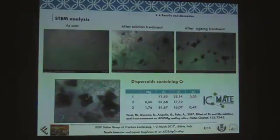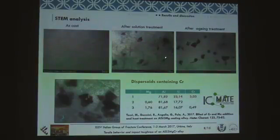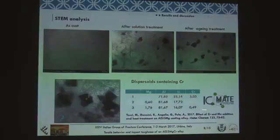We also went to higher magnification, and here we realized that chromium also leads to the formation of these precipitates — these dispersoids — which are present in this alloy as well, and we confirmed the presence of chromium in them.